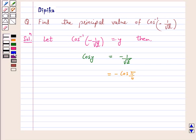Now we know that cos of pi minus x equals minus cos x. So this is equal to cos of pi minus pi by 4, which is equal to cos 3 pi by 4.